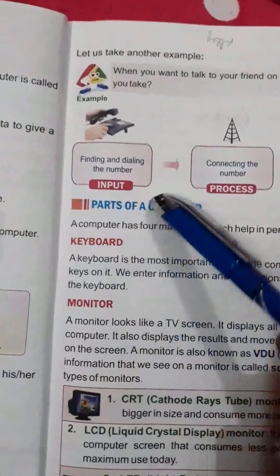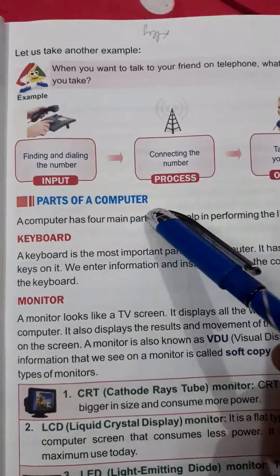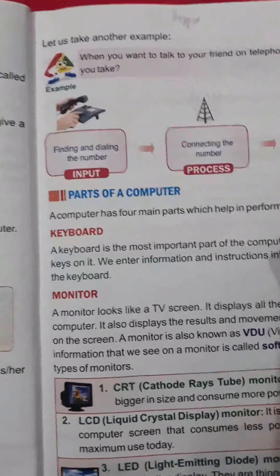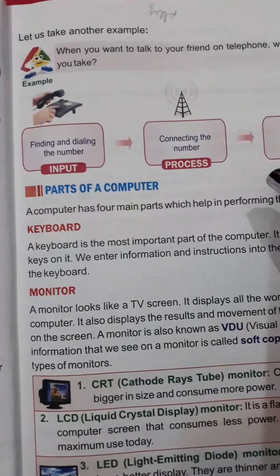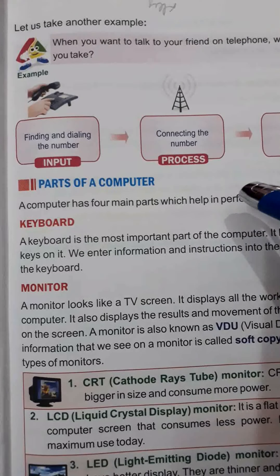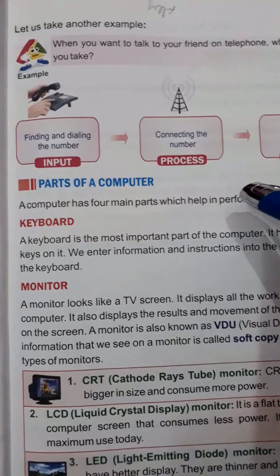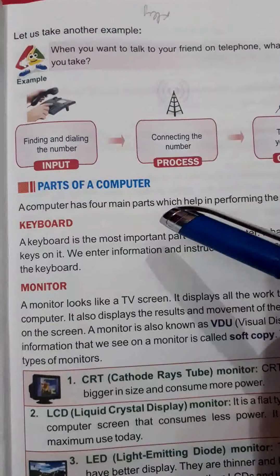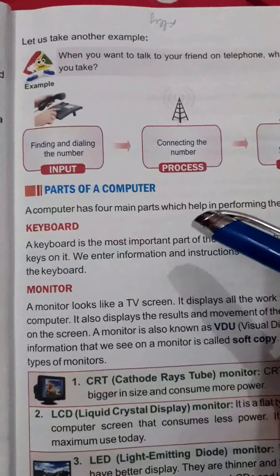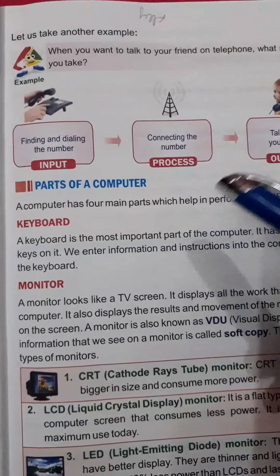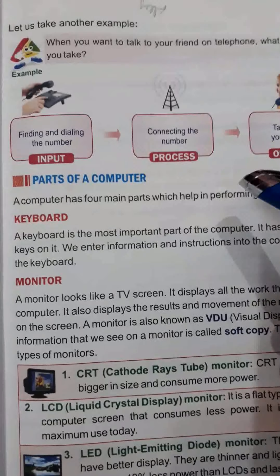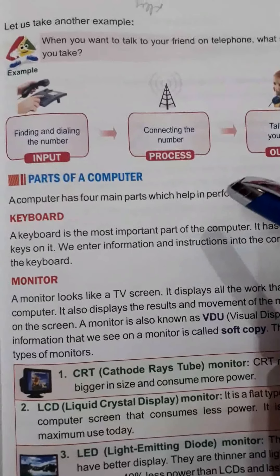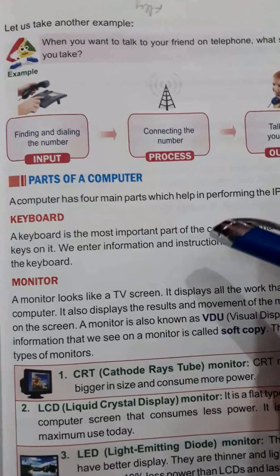Now, parts of the computer. There are four main parts of a computer that help in performing the IPO cycle — input, process, and output. All of this is only possible when the four main parts are present. If even one part is missing, the IPO cycle cannot be completed and we cannot properly input data or see the output.